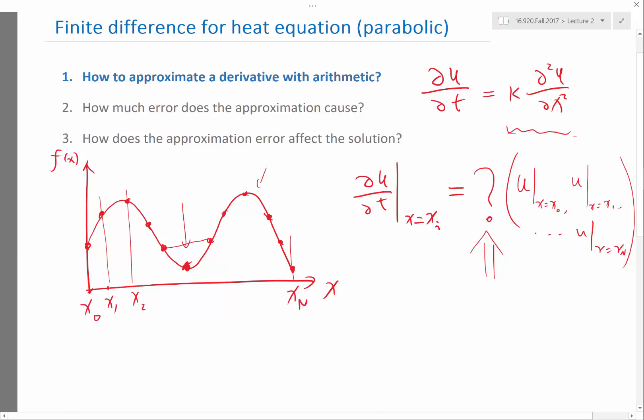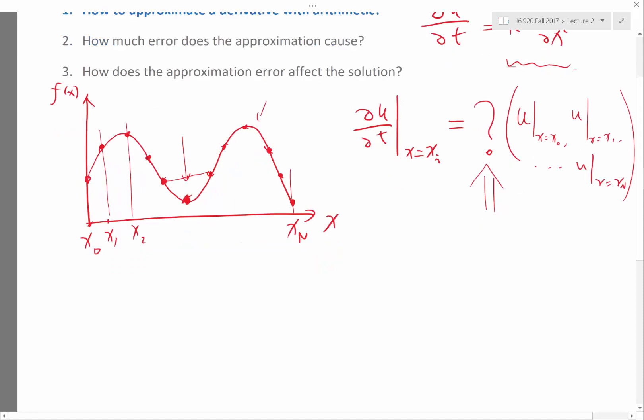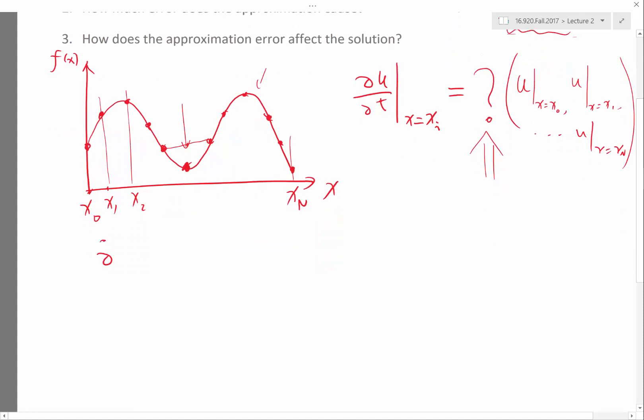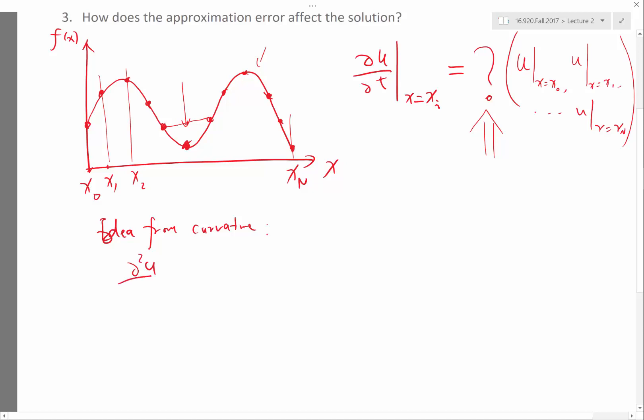So here, we actually don't really know the value of the function anywhere other than these three points. So the only test we can do is to see if we average these two grid points, is it going to be higher or lower than the middle grid points, right? So from an idea, idea from curvature, so the second order derivative is greater than zero means that.